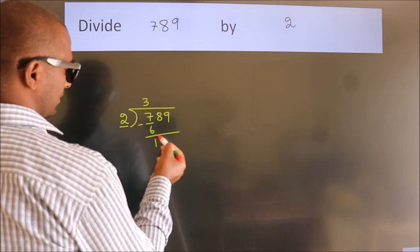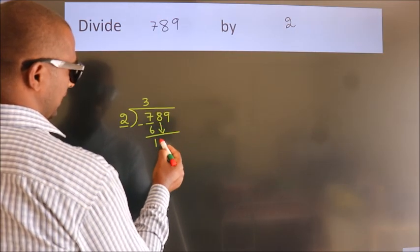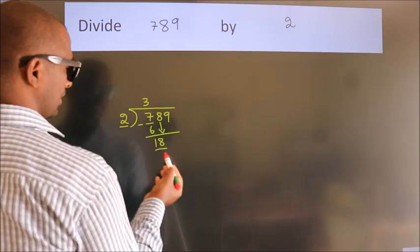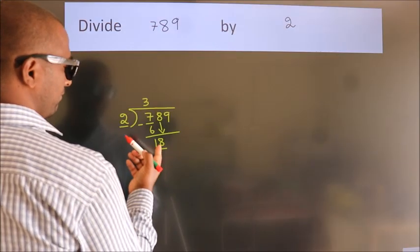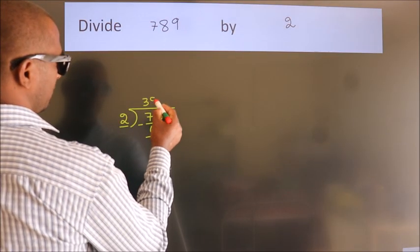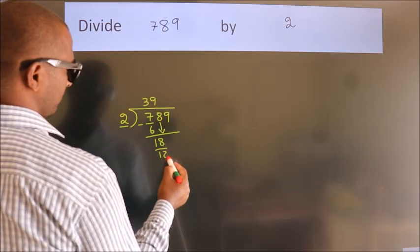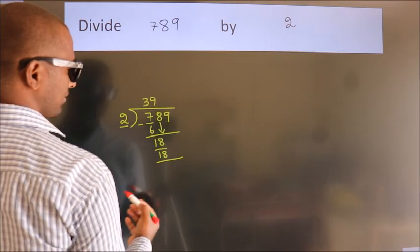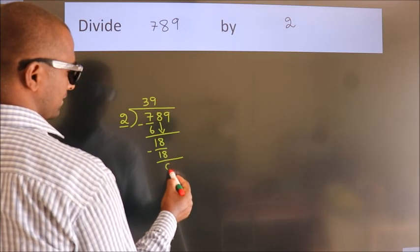After this, bring down the beside number. So 8 down. So 18. When do we get 18 in 2 table? 2 nines, 18. Now we subtract. We get 0.